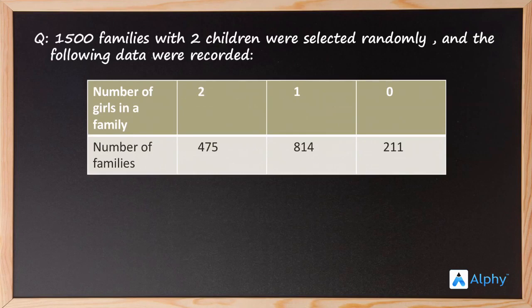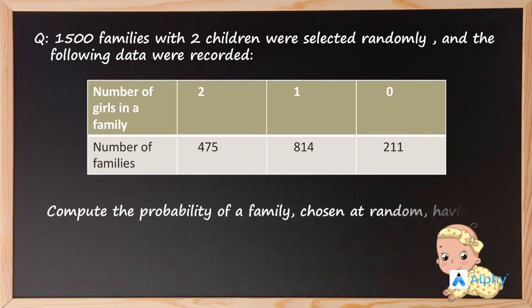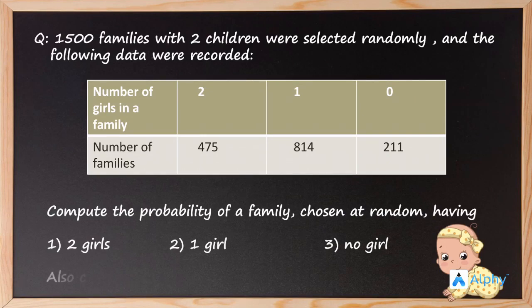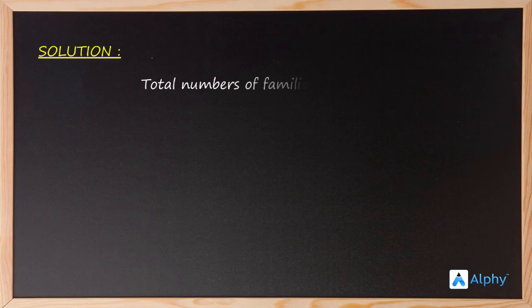We have to compute the probability of a family chosen at random having two girls, one girl, and no girls. We also have to check whether the sum of these probabilities is one. The total number of families is equal to 1500.